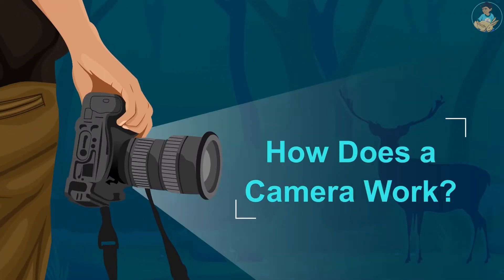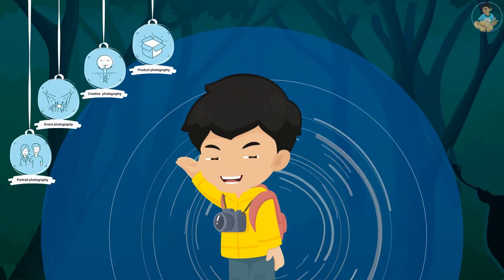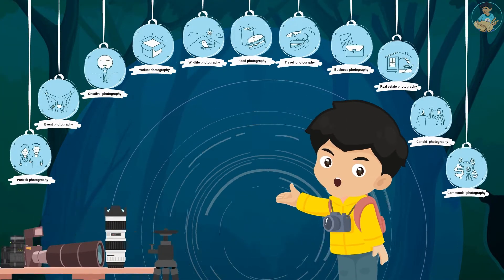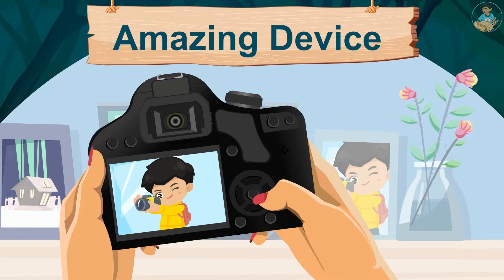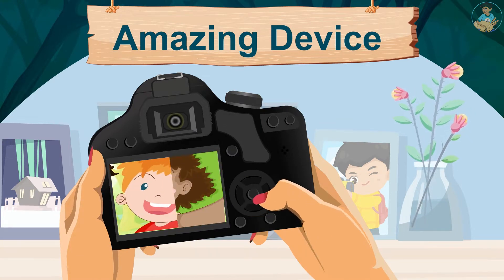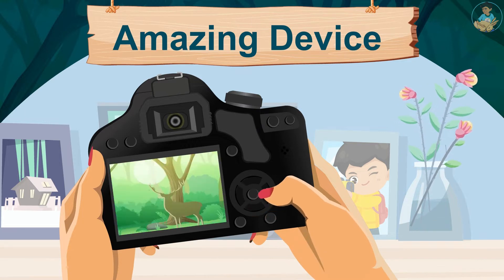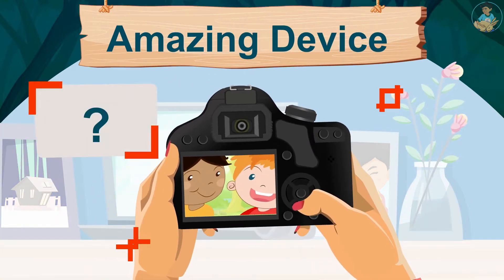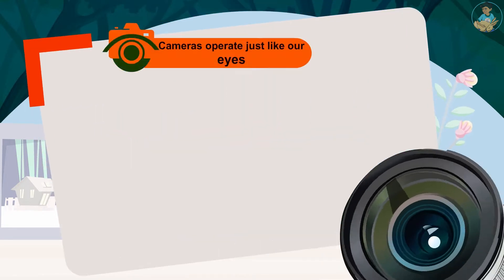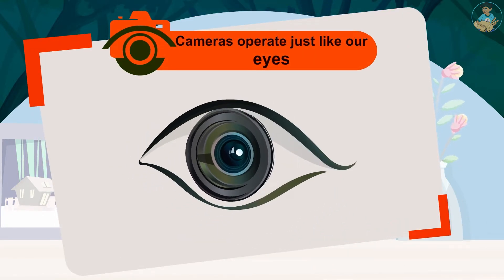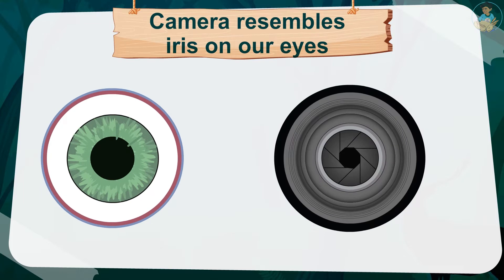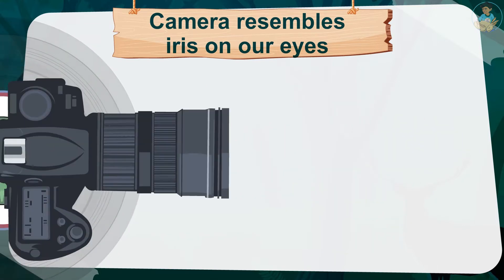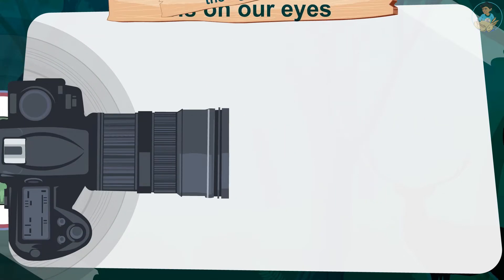How does a camera work? Part one: the exposure triangle. Now that we have the basic introduction of photography and its types, let us deep dive and understand how cameras work. Cameras are an amazing device — they let us capture moments in time and preserve them for years to come. Cameras operate just like our eyes; the diaphragm on the camera resembles the iris on our eyes.